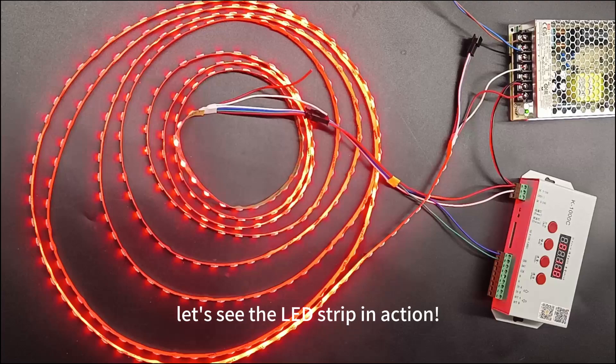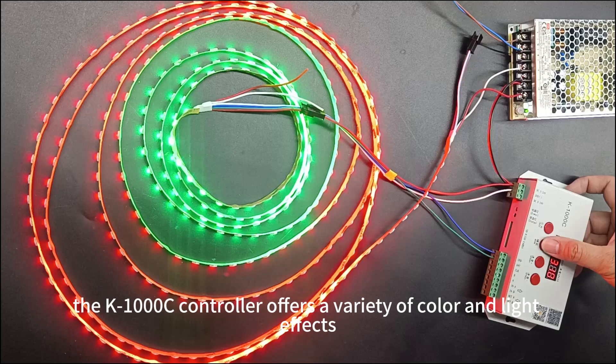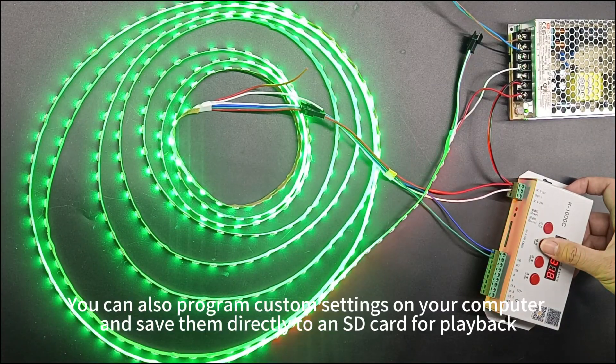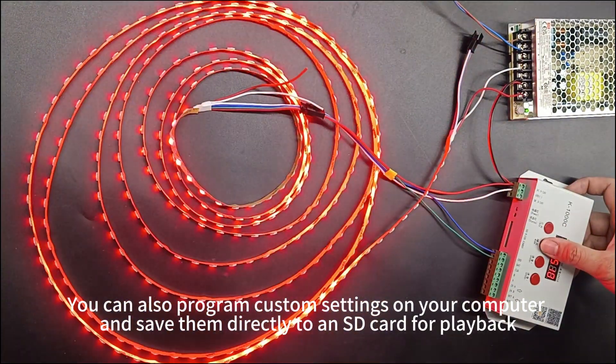Now, let's see the LED strip in action. With 31 built-in modes, the K100C controller offers a variety of color and light effects. You can also program custom settings on your computer and save them directly to an SD card for playback.